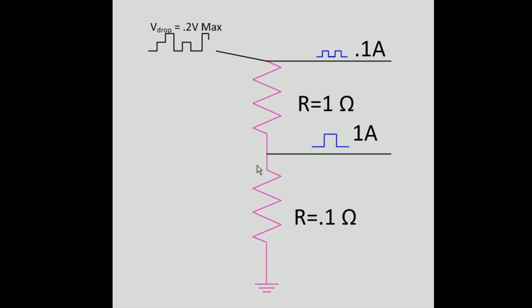We're going to talk about how to address that. Often we have a shared ground path and the resistance in that path creates a voltage drop. If this component draws one amp and there's 0.1 ohms, there's going to be a 0.1 volt drop — and if that's a square wave, you're going to see a 0.1 volt square wave drop. If another component shares that same path at 0.1 amps with a full ohm, it all adds together — 0.2 volts right off our noise margin.